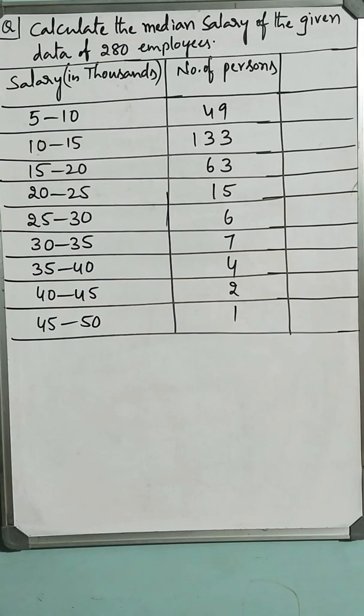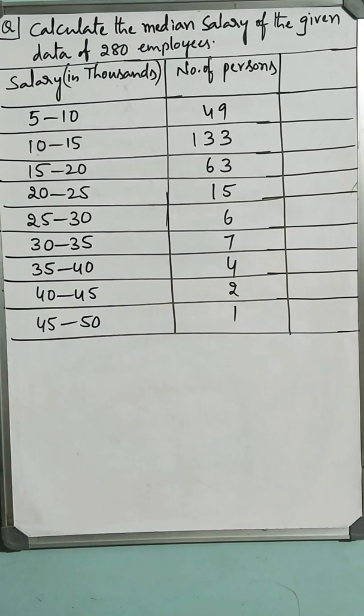You can see 5 to 10,000 for 49 members, 10 to 15,000 by 133 persons, 15 to 20,000, 63 persons like that. We have to calculate the median salary of the employees. Let us go for the calculation.